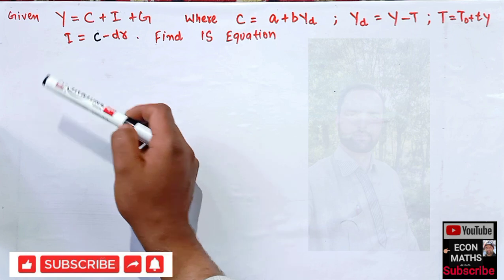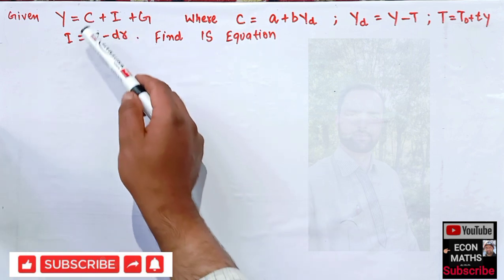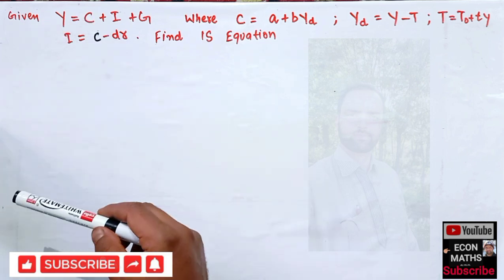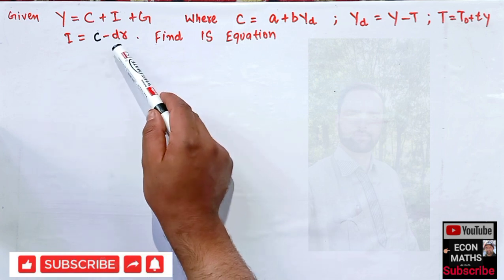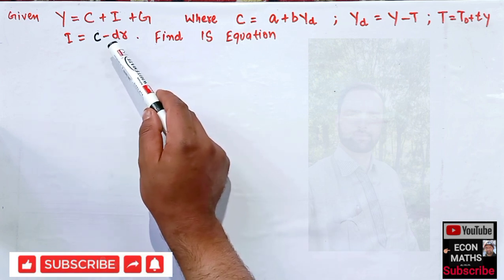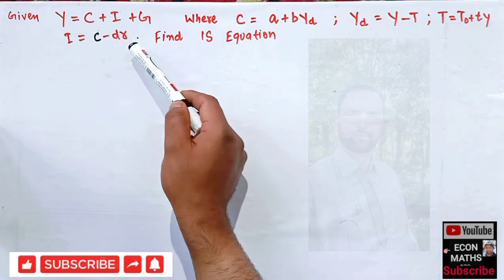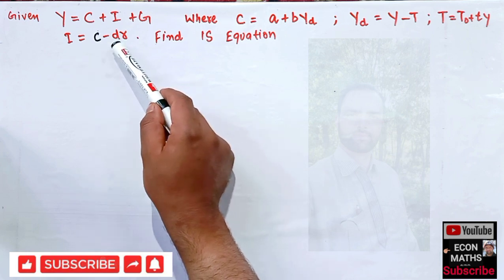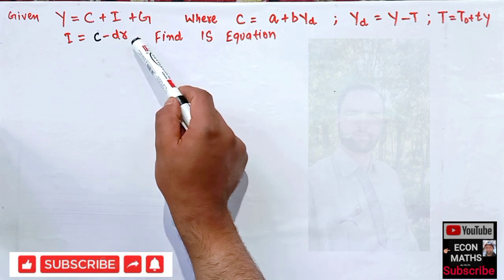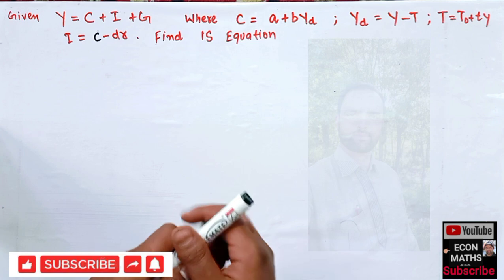We are also given the investment function: I = C minus D·R, where C here is the autonomous investment (not to be confused with consumption), D is the marginal propensity to invest, and R is the rate of interest. D·R represents induced investment which depends on the rate of interest. We have to find the IS equation from this question.